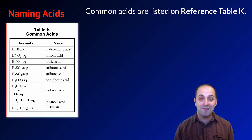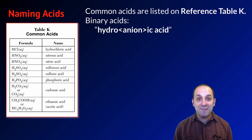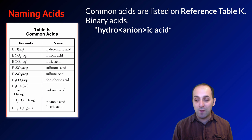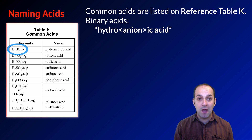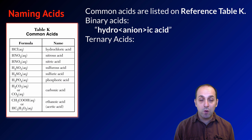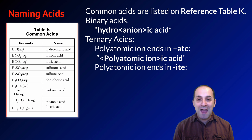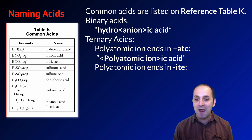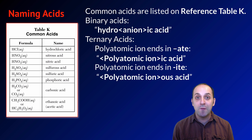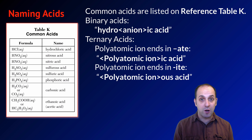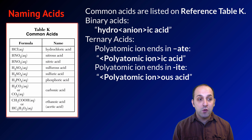For binary acids, put the prefix 'hydro' in front, then take the name of the anion, and end it with 'ic acid.' You can see this on Reference Table K with HCl — it's hydrochloric acid. Ternary acids are a bit different. If the polyatomic ion's name ends in '-ate,' the acid's name is the polyatomic ion name plus 'ic acid' — no 'hydro' prefix. If the polyatomic ion's name ends in '-ite,' the acid's name is the polyatomic ion name plus 'ous acid,' and again, no 'hydro.'